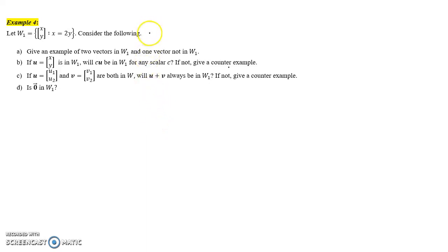In this problem, we're asked to look at a subset of the set of two-dimensional vectors, specifically the ones where the x component is equal to 2 times the y component. So I could replace the x here with 2y, and express this collection of vectors in this form, where the x component is equal to 2y.